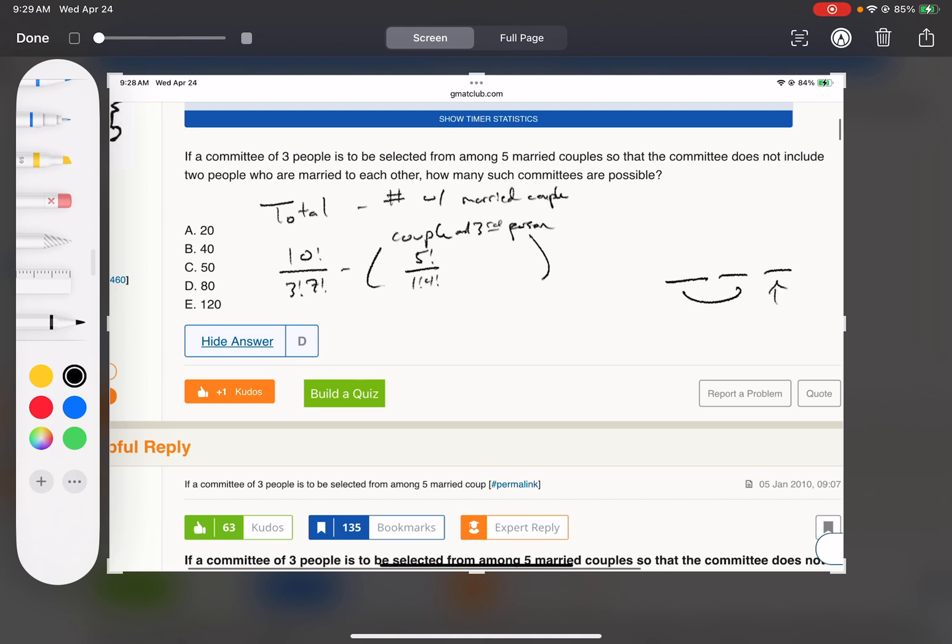Then for the third slot - there were ten people, I've picked a couple, that leaves eight people left, and I just need to choose one. And it's 'and' - a couple and a third person - so I multiply.